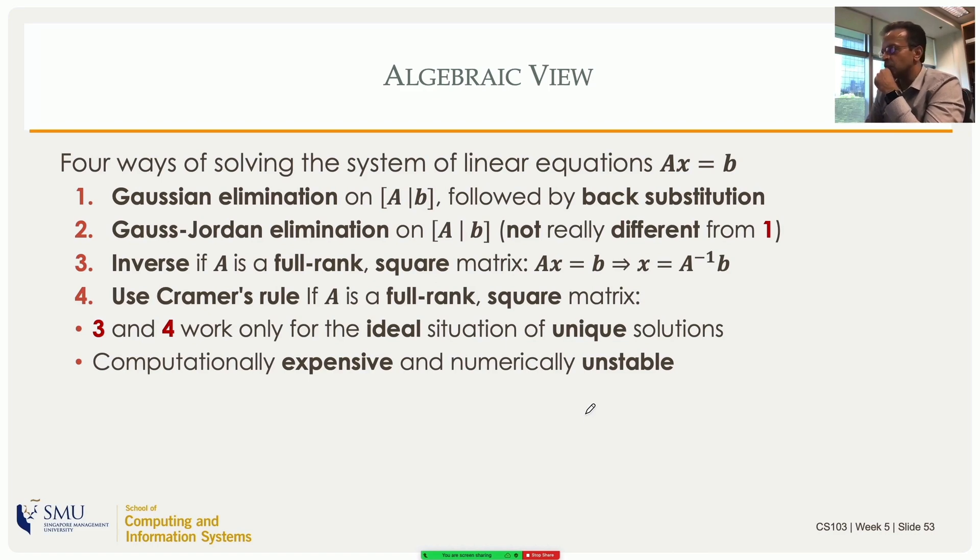Then if you have inverse, if A the coefficient matrix is full rank square, then you have an inverse and then x can be written formally as A inverse b, or you could use Cramer's rule also. So four different ways of doing it, but remember inverse and Cramer's rule will work only in the ideal situation you have a unique solution and A is invertible, etc. They are also computationally expensive and apparently numerically not very stable either.